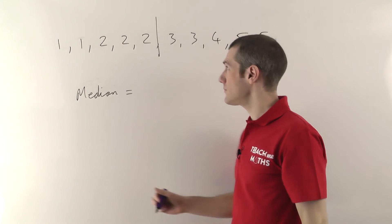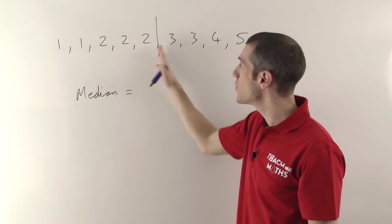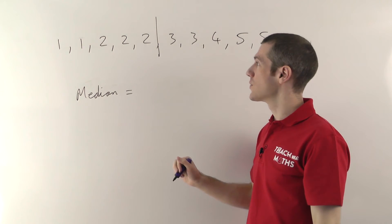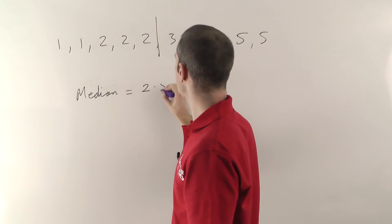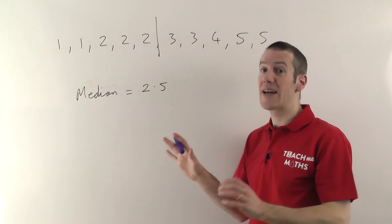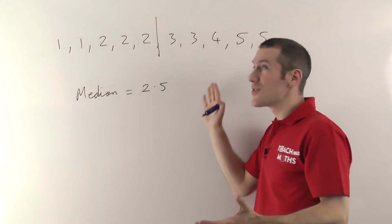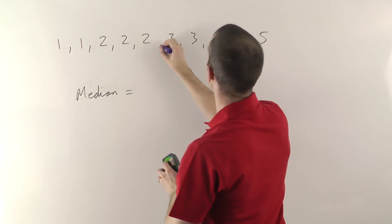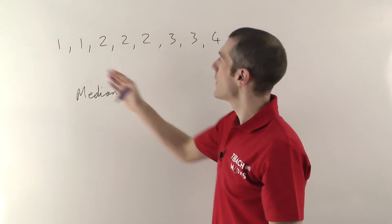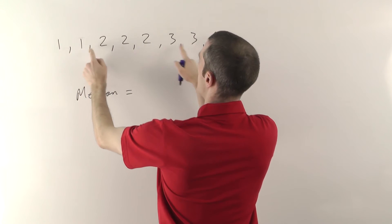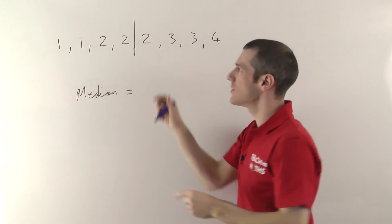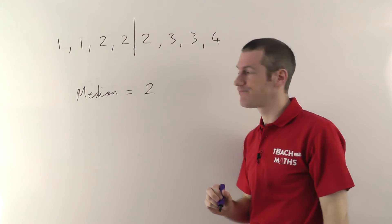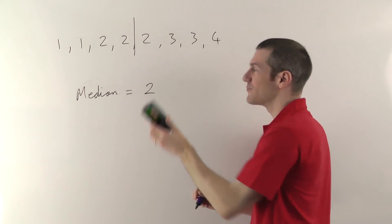If the middle point falls between two numbers, you take the number halfway between those two. In this case, halfway between two and three is 2.5, so the median is 2.5. If I remove the last two numbers so there are eight numbers, pairing inward gives a middle point between two and two — halfway between two and two is still just two, so the median would be two.